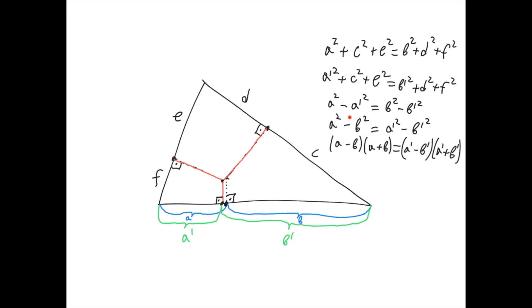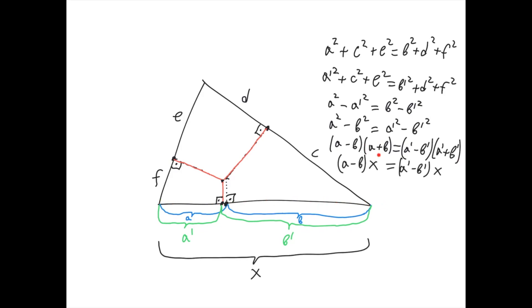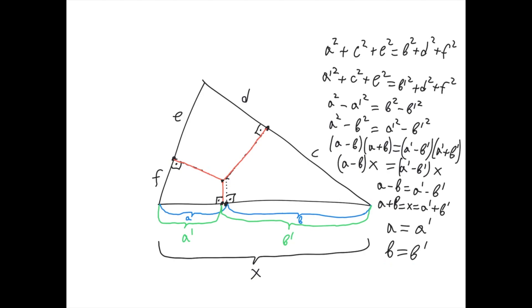We factor: a² − b² = (a − b)(a + b) and a'² − b'² = (a' − b')(a' + b'). Calling the full side length x, we have a + b = x and a' + b' = x, so x cancels and we get a − b = a' − b'. Combined with a + b = a' + b', adding these two equalities gives 2a = 2a', so a = a' and therefore b = b'. This means the two points coincide, proving that the three perpendiculars intersect at a single point.